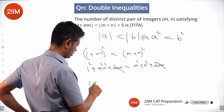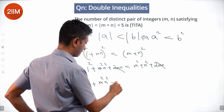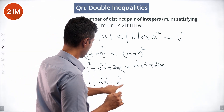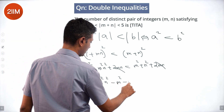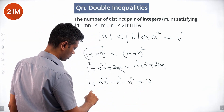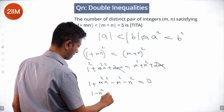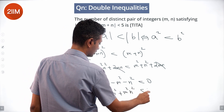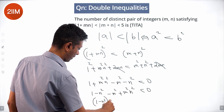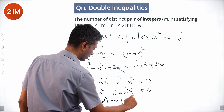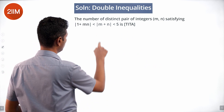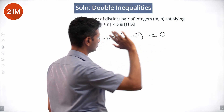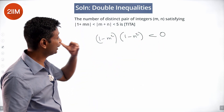The 2mn gets knocked off on both sides, giving 1 + m²n² − m² − n² < 0, or equivalently (1 − m²)(1 − n²) < 0. Quite beautifully, (1 − m²)(1 − n²) < 0.